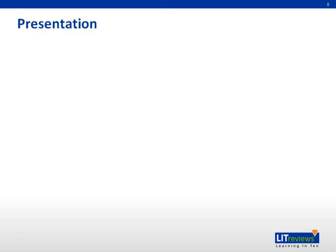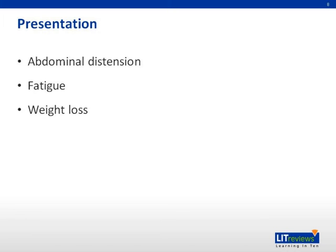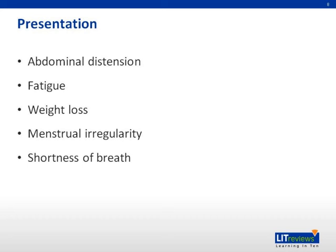Patients with Meigs' syndrome usually present with vague chief complaints, such as abdominal distension, fatigue, weight loss, menstrual irregularity, shortness of breath, and a nonproductive cough. Women with Meigs' syndrome may also have a family history of ovarian cancer.